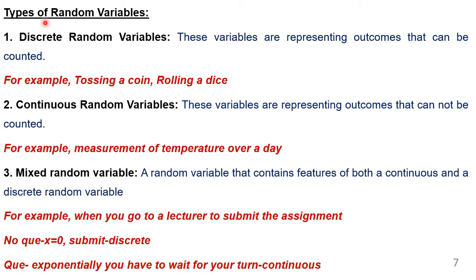There are three types of random variables. The first one is called a discrete random variable. In a discrete random variable, outcomes can be counted. These variables represent outcomes that can be counted. For example, tossing of a coin or rolling of a dice. The second type is continuous random variable, where outcomes cannot be counted. For example, temperature over a day continuously varies and changes, so it is not a countable quantity.